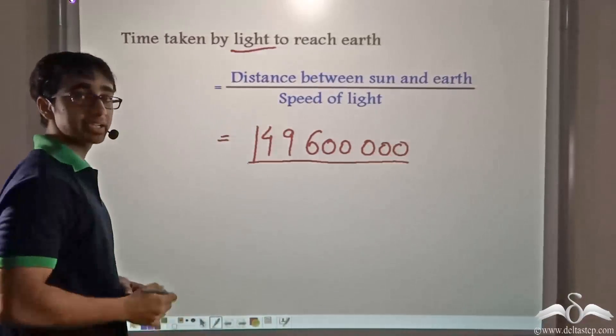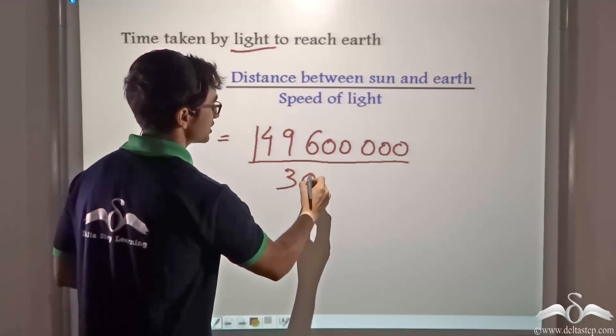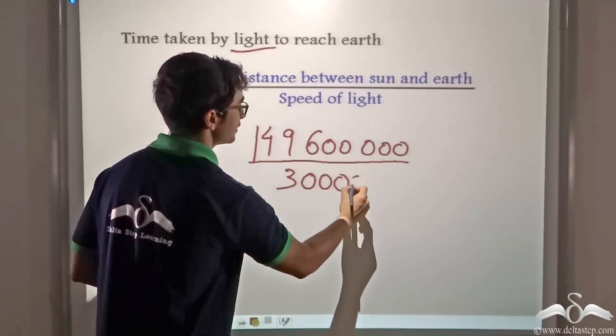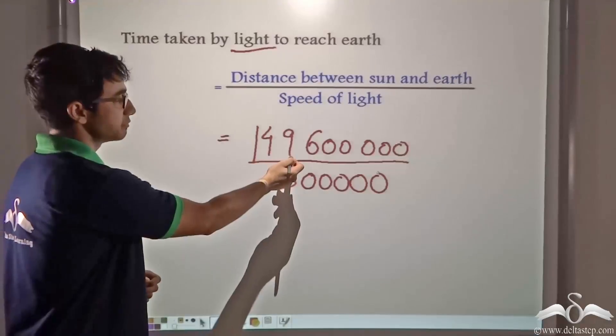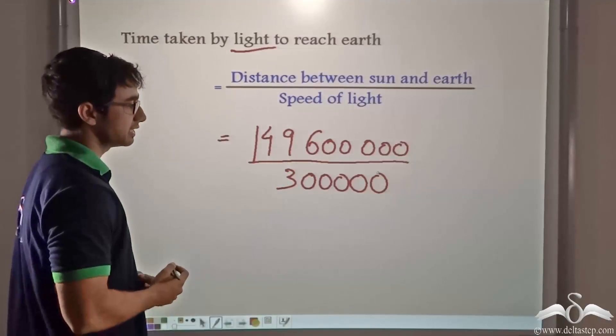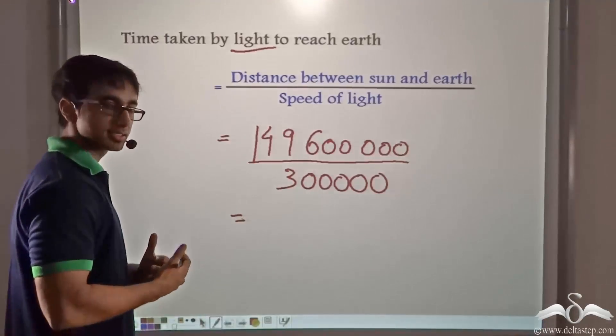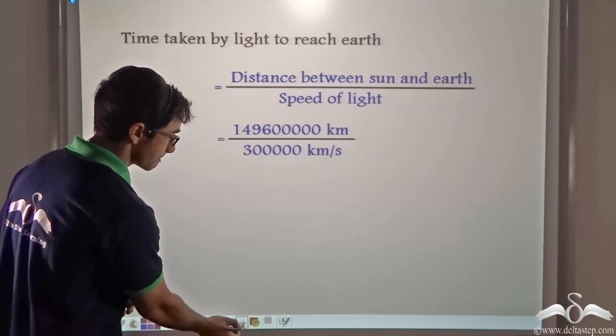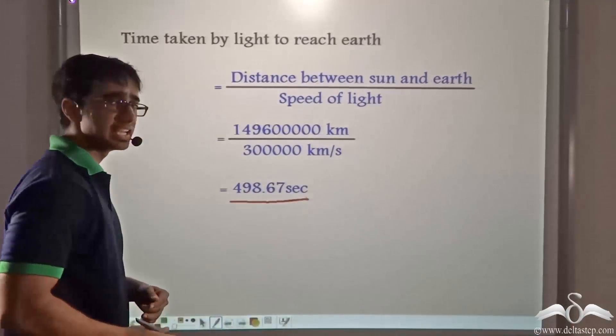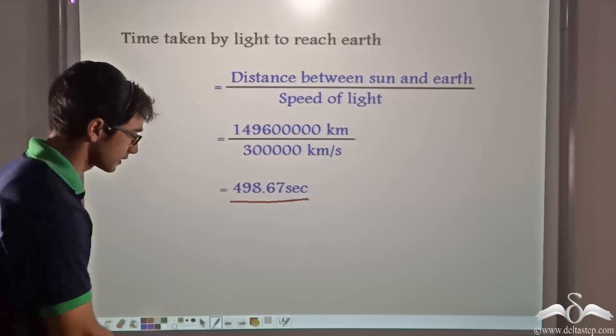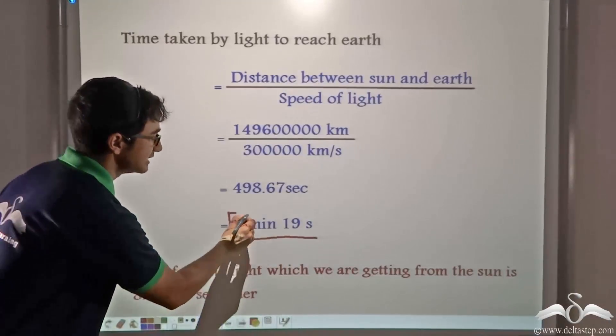This divided by the speed of light will give us how much time it takes for light to reach the earth from the sun. So 149,600,000 divided by 3 lakh. If we evaluate this, it comes out to be 498.67 seconds. If we further simplify this, it comes out to be 8 minutes and 19 seconds.